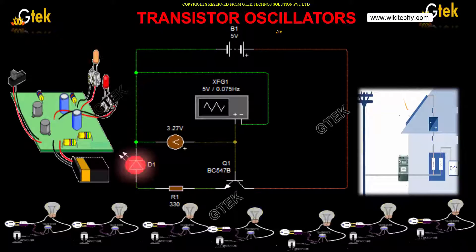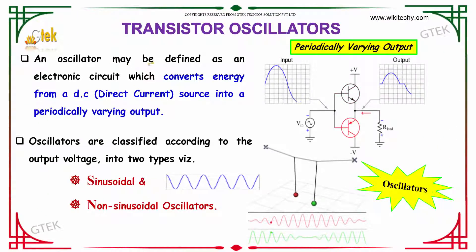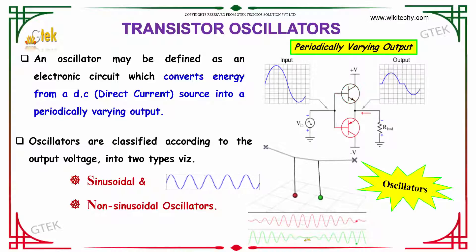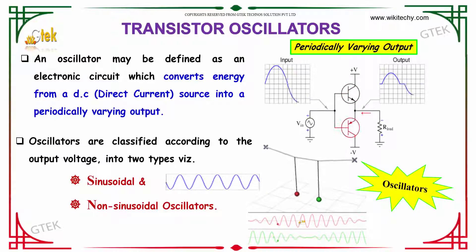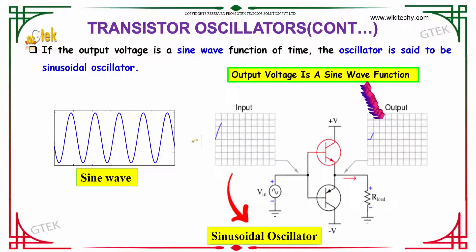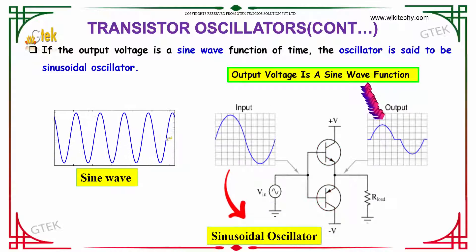Now we are going to talk about transistor oscillators. An oscillator may be defined as an electronic circuit which converts energy from a direct current source into a periodically varying output, as you can see here. Oscillators are classified according to the output voltage into two types: sinusoidal and non-sinusoidal. If the output voltage is a sine wave function of time, the oscillator is said to be a sinusoidal oscillator.